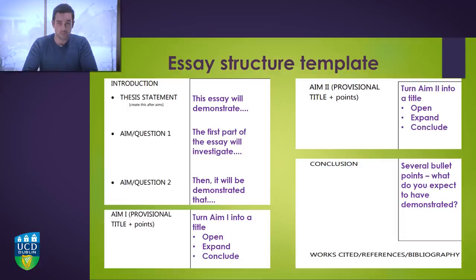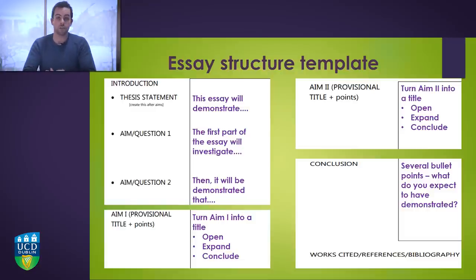Now we can move on to the essay structure template. This template was developed because students found it difficult facing the blank page. The point is that you just start filling in information. On the first page of your document, write 'Introduction,' followed by thesis statement, aim one, question one, aim two, and question two. On page two, write aim one with a provisional title and points. On page three, aim two with provisional title and points. On page four, write 'Conclusion.'